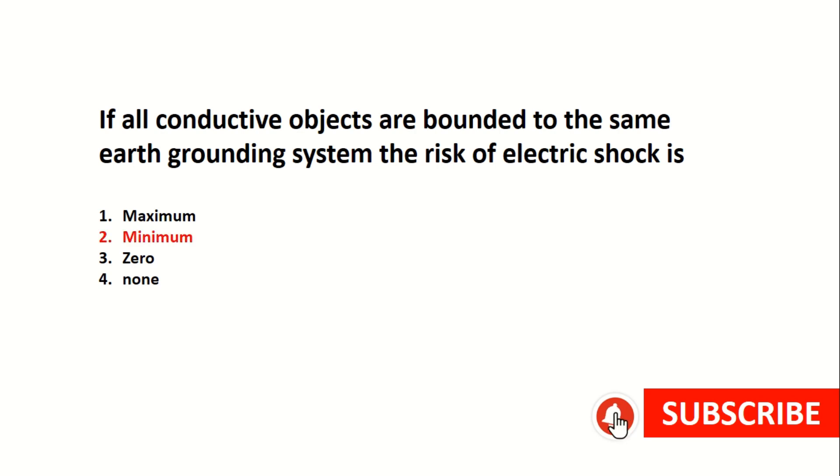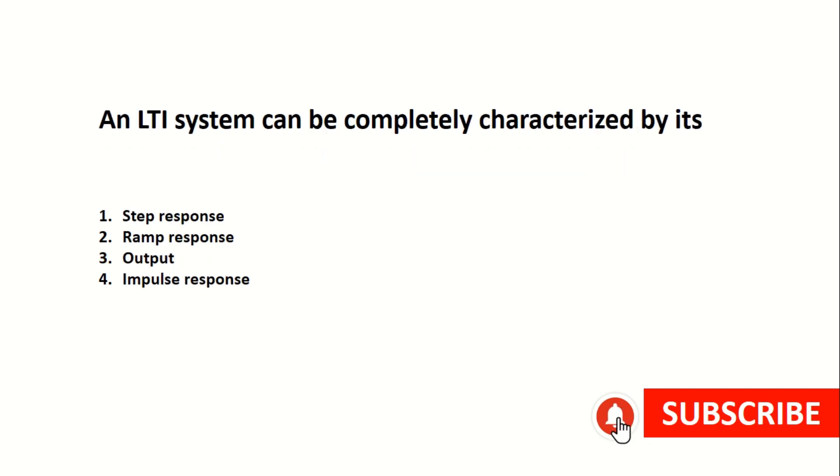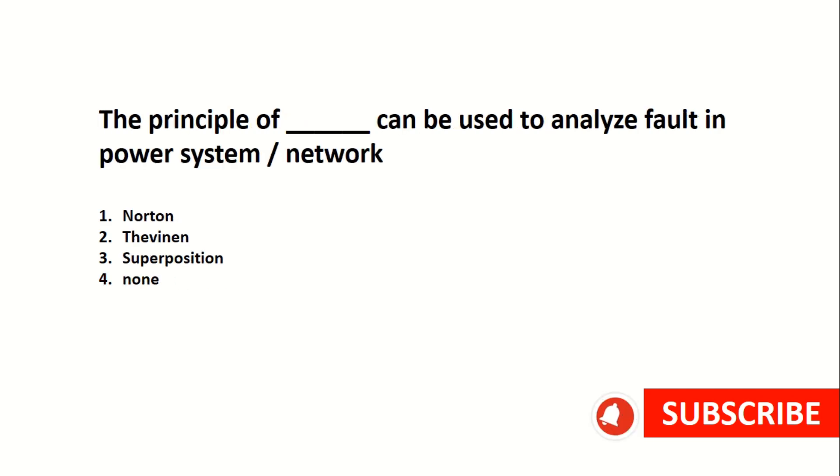The small voltage less than 10 volts that can be measured between two possible constant points is stray voltage. An LTA system can be completely characterized by impulse response.